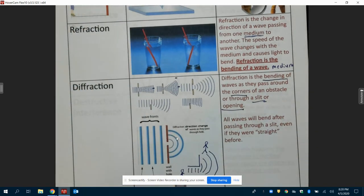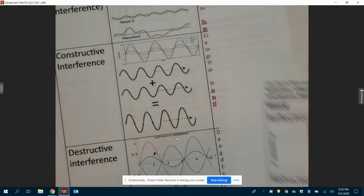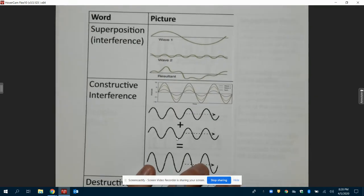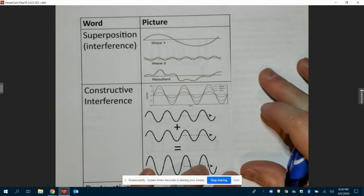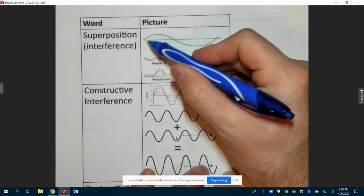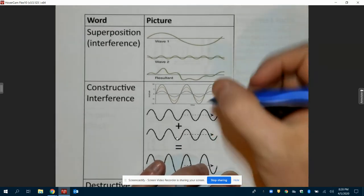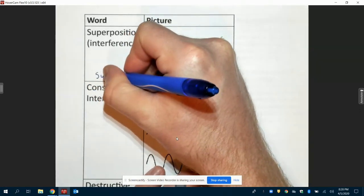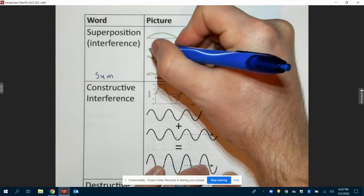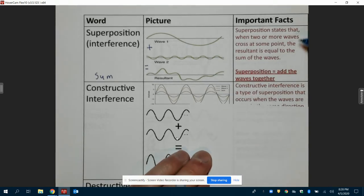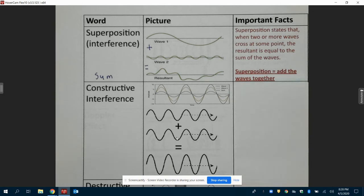So moving on to the next set of examples here. Our first one is this term superposition. So what superposition is, is when we have two or more waves. You've got this wave that's going this way, and this one that's repeating is a much smaller wave. And what superposition is, is really it is just the sum or combination of this wave. We're taking this wave plus this wave. Our definition is this: Superposition states that when two or more waves cross at some point, the resultant is equal to the sum of the waves. So superposition is really just adding waves together.